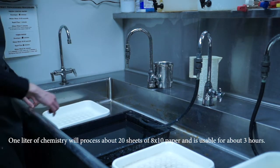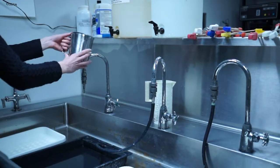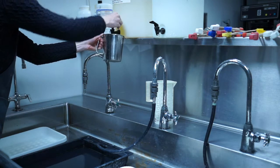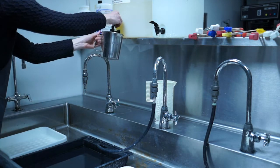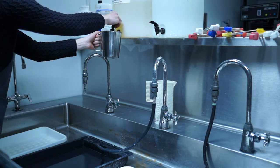Pouring up developer. It's in the tank to the left. For the 8x10 trays, you just need one full beaker that comes straight out of the tank. For the 11x14 trays, you need about one and a half.